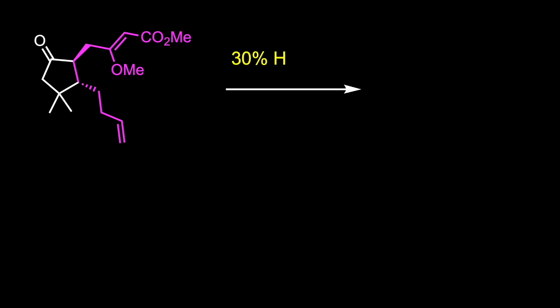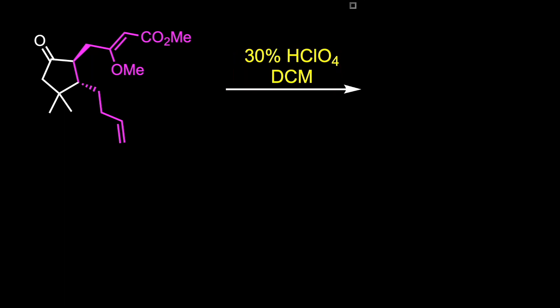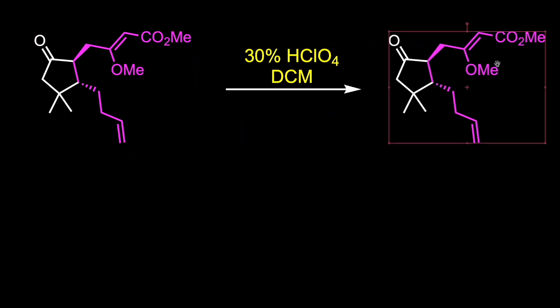Hydrolysis of the enol ether with 30% aqueous perchloric acid in DCM provided the ketoester.